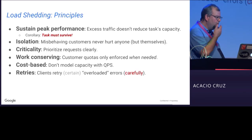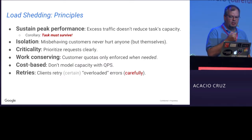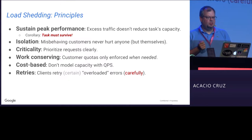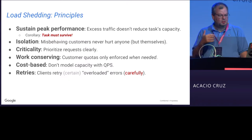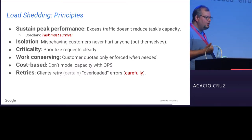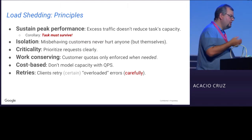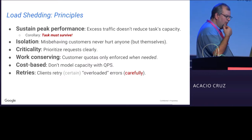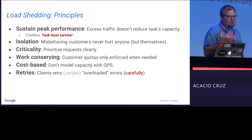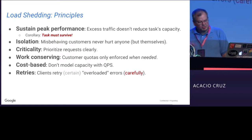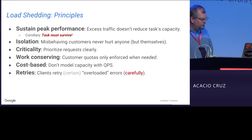These are the principles we developed over time. The first and most important is sustained peak performance — make sure services survive. The second is isolation, ensuring problems in one customer's traffic don't impact another. Criticality is something we've learned over time. Work conserving — even after putting up barriers, if you can still do the work, do it. Cost-based instead of QPS-based. And also retries.